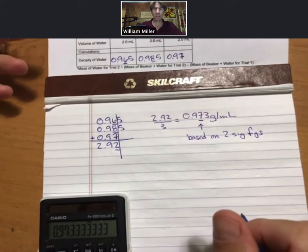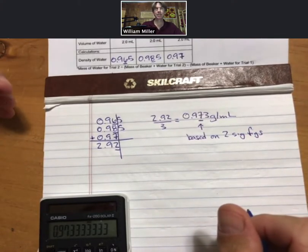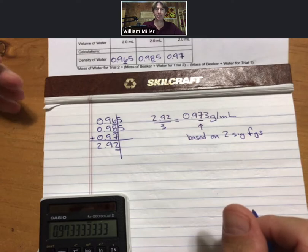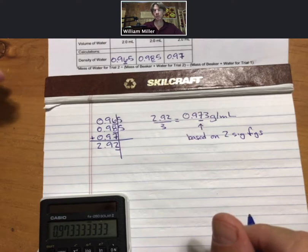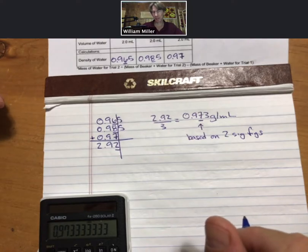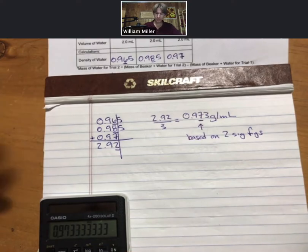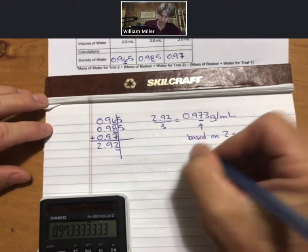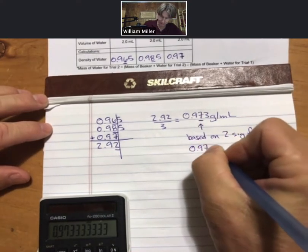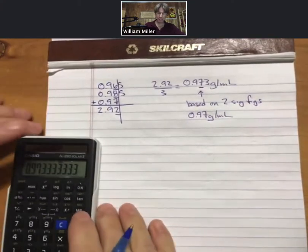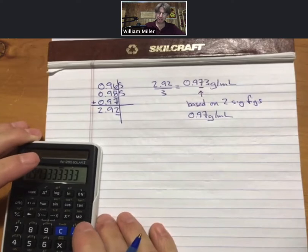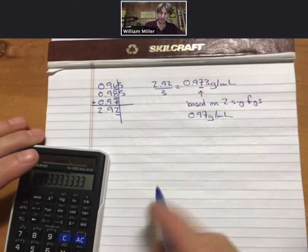Remember, significant figures are always trying to say how can we express the number in a way that expresses all of the certain digits plus one digit that is uncertain. So we're going to say 0.97 grams per milliliter, that's our average. Now let's do our standard deviation.